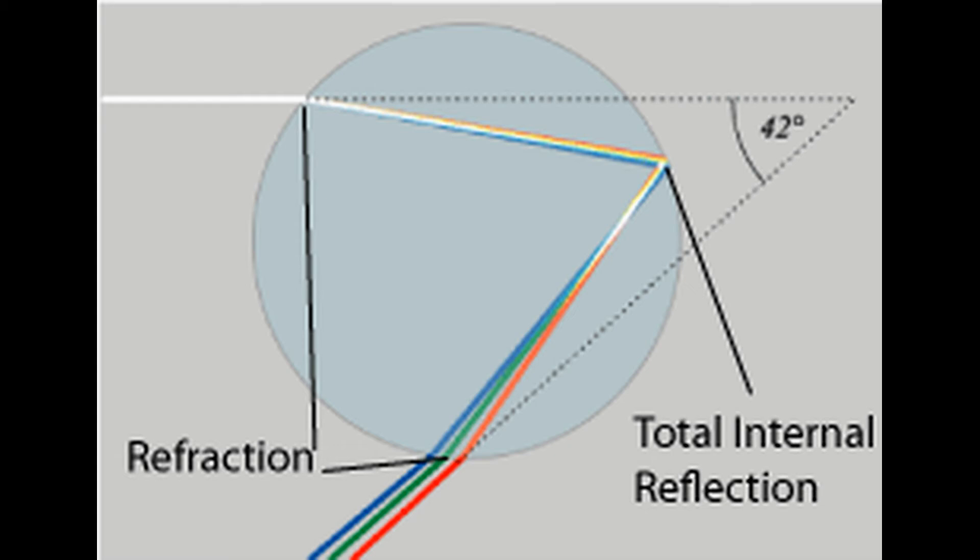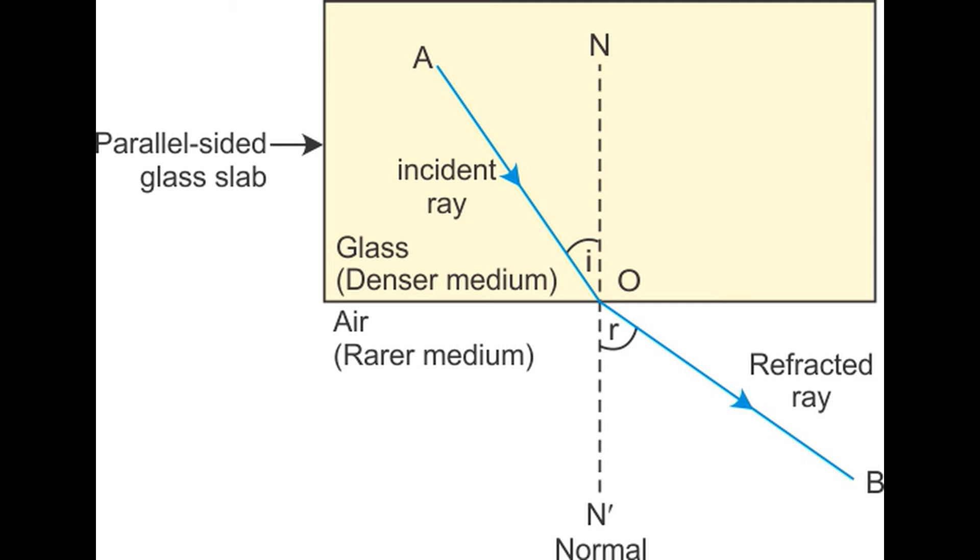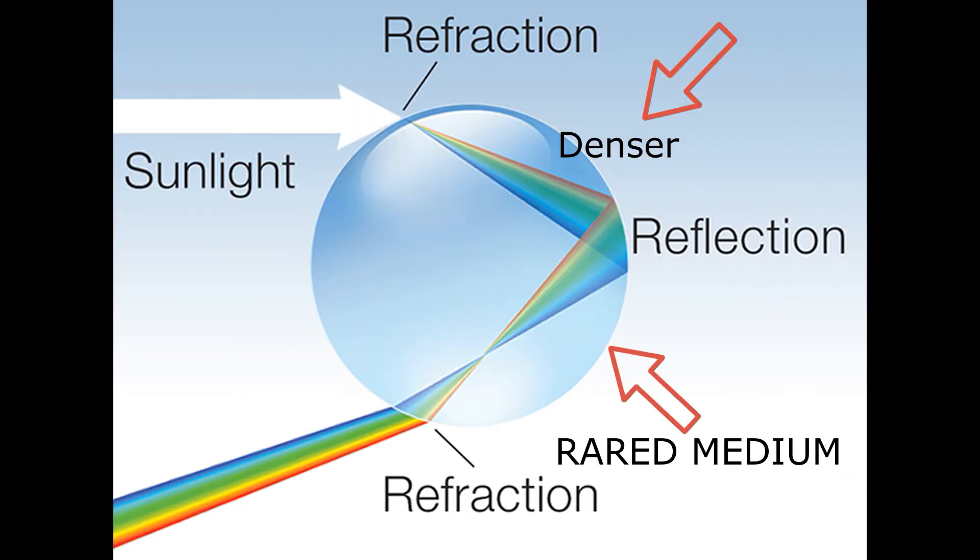Total internal reflection occurs only when the light is moving from a rarer medium to a denser medium. In this case, water is a much denser medium than air. Hence the first criteria for total internal reflection is satisfied.